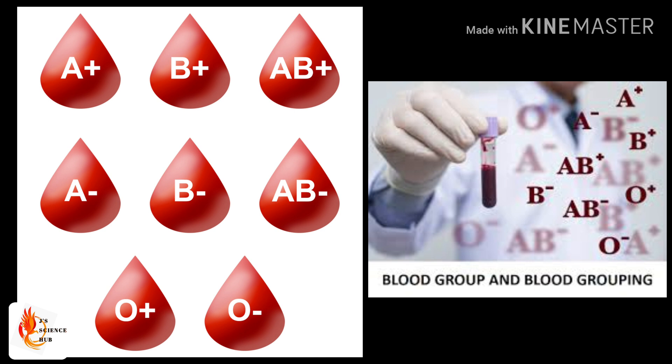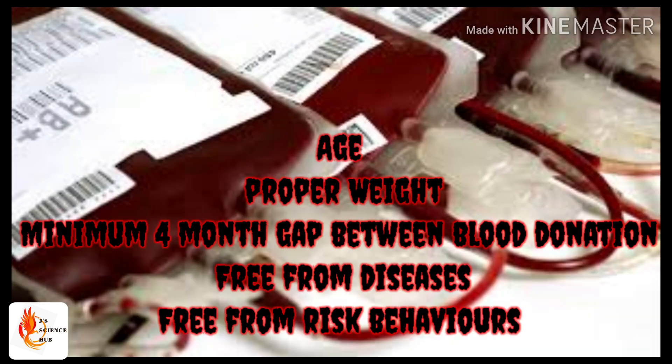So now you understand the compatibility of blood group as well as the compatibility of the Rh factor. There are some other factors we should consider when transfusing blood. The donor should be free of diseases, the donor's blood should be free of any narcotics like alcohol, and the donor should have a proper age as well as proper weight.